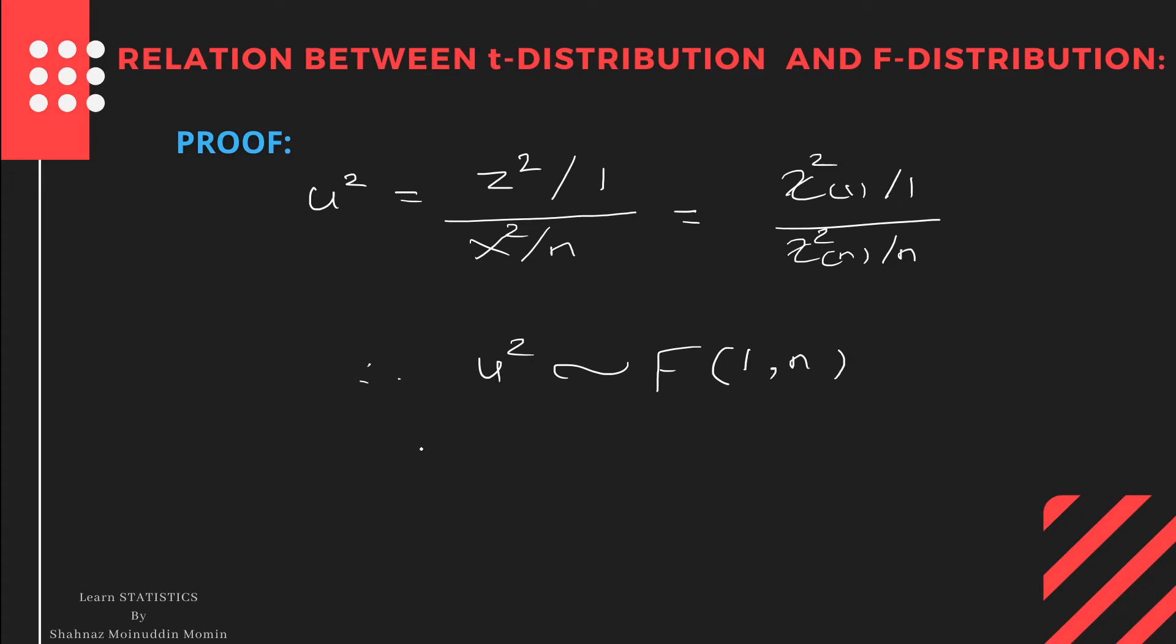Hence, the result. In this lecture, in this way, we obtain the distribution of U², where U is a T-variate with n degrees of freedom.